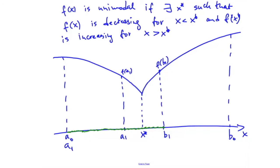This efficiency matters especially if computing f at any point is very difficult — say the black box is a simulation that runs for several hours before returning the value of f. In that case, it is extremely important to use as few function evaluations as possible. So we want to reuse a1 and select only one additional second point.